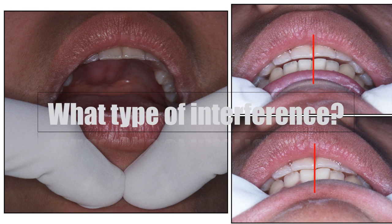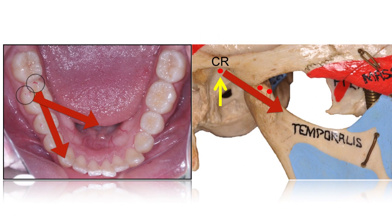We know that the causing factor is the interference, but what type of interference? There are two types of interferences: to the arc of closure and to the line of closure. The interference to the arc of closure deviates the mandible forward from the first contact — the condyle slides down against the eminence, requiring the inferior lateral pterygoid muscle to contract. The interference to the line of closure deviates the mandible left or right, causing one condyle to slide down and toward the midline while the other maintains the centric relation position. In other words, uncoordinated muscle function is initiated.